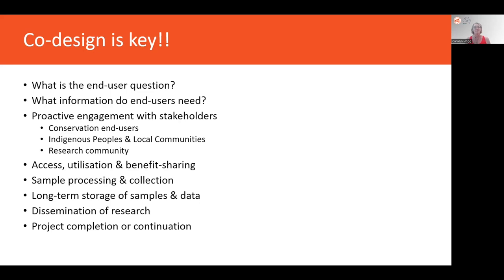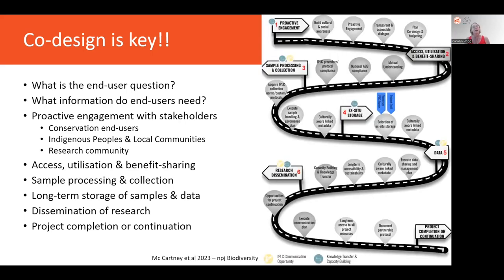If you're looking for an excellent roadmap for undertaking all the different steps that make up a successful co-designed project, I highly recommend the paper produced by Anne McCartney and colleagues in NPJ Biodiversity, available as an open access paper. It goes quite thoroughly through each of the distinctive steps that make up a successful conservation genetics project.